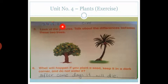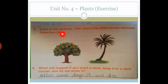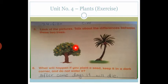First of all you have to write the date and CW on top of the page and look at question number 5. Question number 5 is: look at the pictures, talk about the differences between these two trees. Look at the picture of these two trees. This is a mango tree and this is a coconut tree. What is the difference between these two trees?